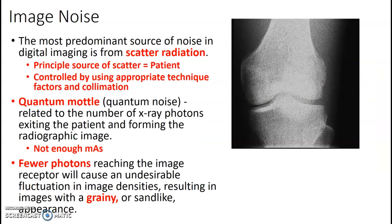Image noise mostly comes from scatter radiation, and the principal source of scatter is your patient. You can control this using appropriate technique and collimation. Quantum noise is usually due to your technique choice — not using enough mAs. It appears as a grainy image because not enough photons made it to the imaging plate.